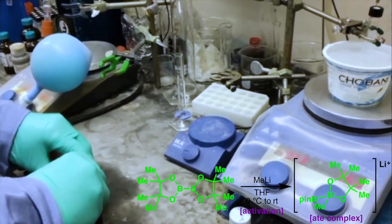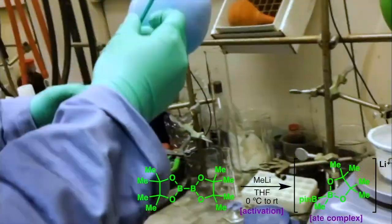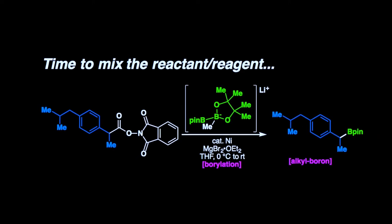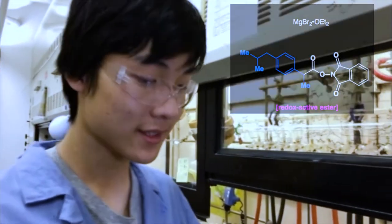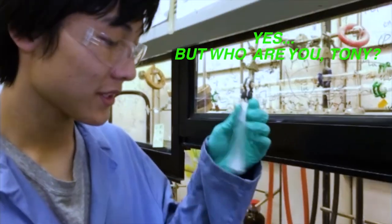Next, we're adding the methyl lithium. We have the magnesium bromide and the redox ester in the same tube, so you can see the white solid in here.